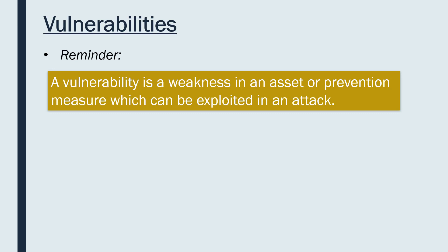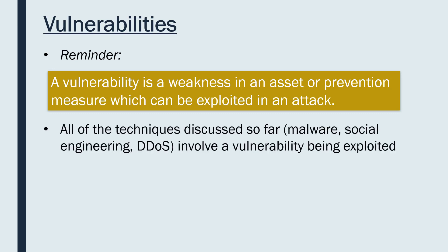A quick recap going back to our first video: a vulnerability is a weakness in an asset or prevention measure which can be exploited in an attack. Assets are anything we are trying to protect, and prevention measures try to protect our assets from vulnerabilities being exploited. We've discussed quite a few attack techniques so far — malware, social engineering, and DDoS and DoS attacks — and they all involve a vulnerability being exploited.